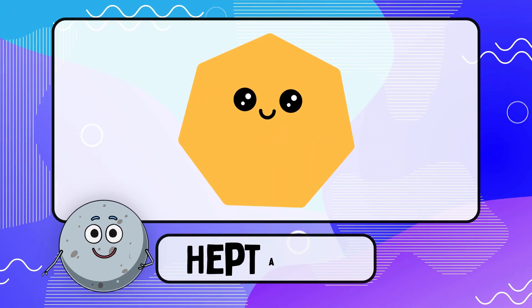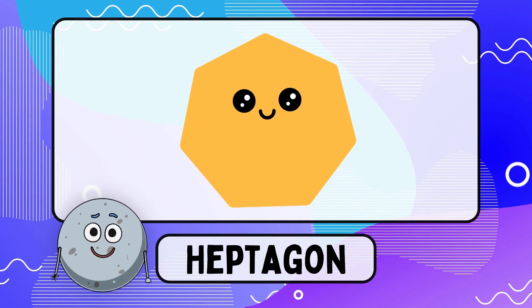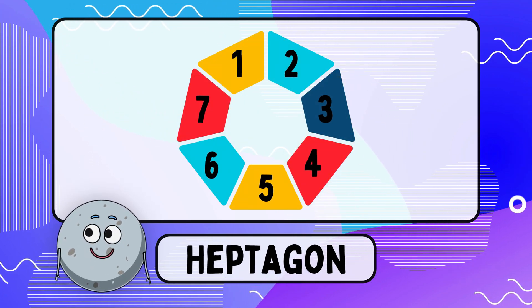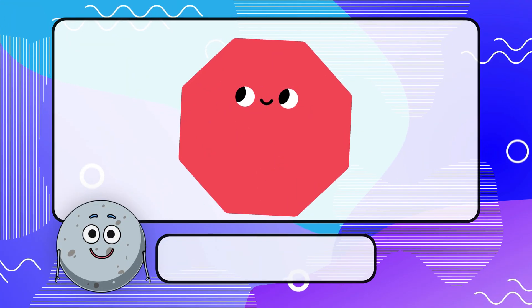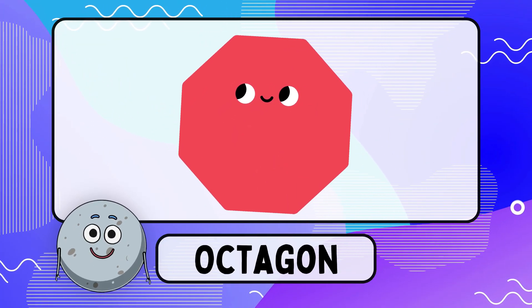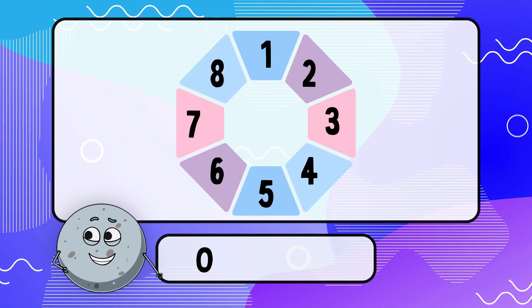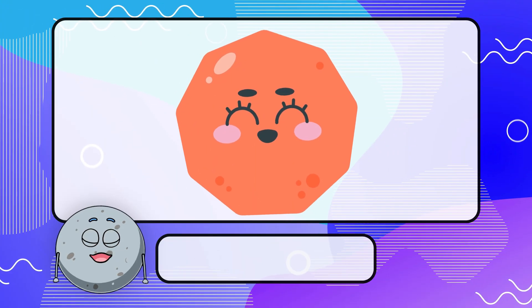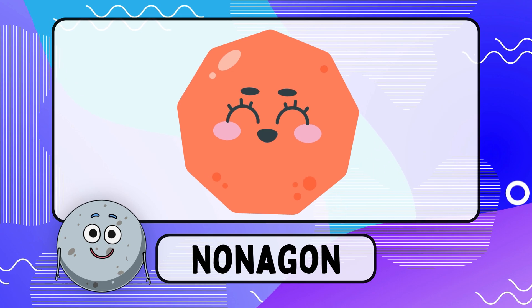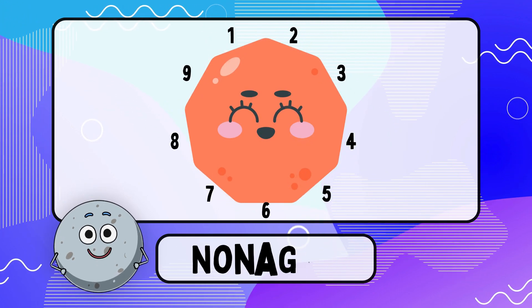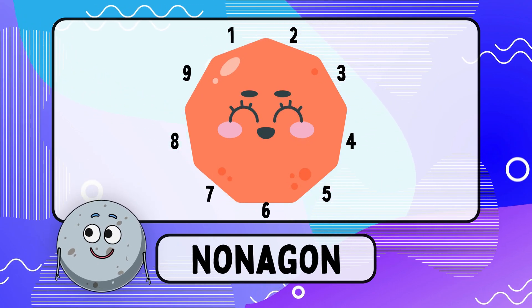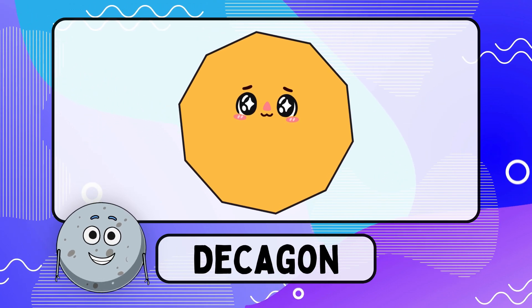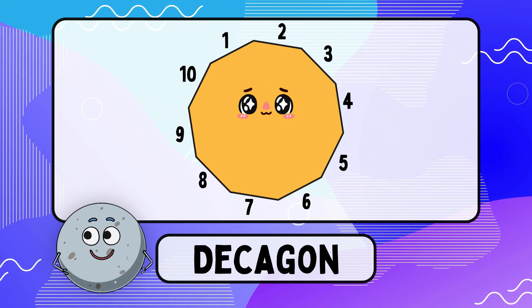Heptagon — the heptagon has seven sides. Octagon — the octagon has eight sides. Nonagon — the nonagon has nine sides. Decagon — the decagon has ten sides.